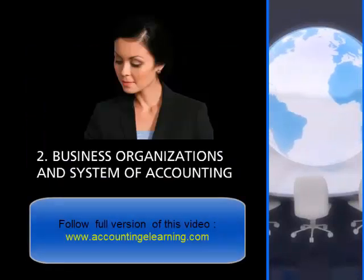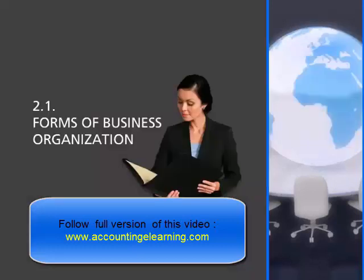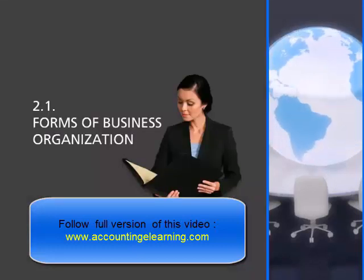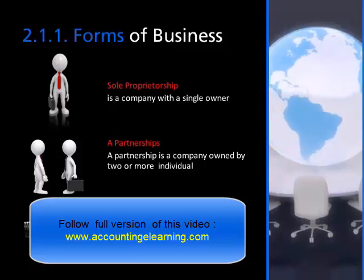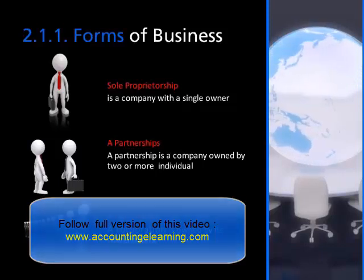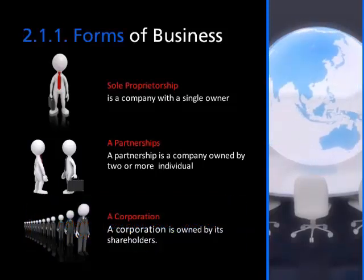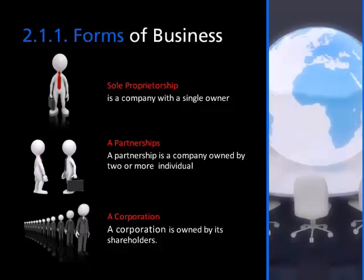Now let's move on to business organizations and systems of accounting. That brings us to forms of business organization. To start a business, a potential owner must have a sufficient amount of capital and must choose an appropriate form of business organization. In accounting, capital refers to money used to start up or grow a new business. With a few exceptions, businesses are organized in one of three basic forms.